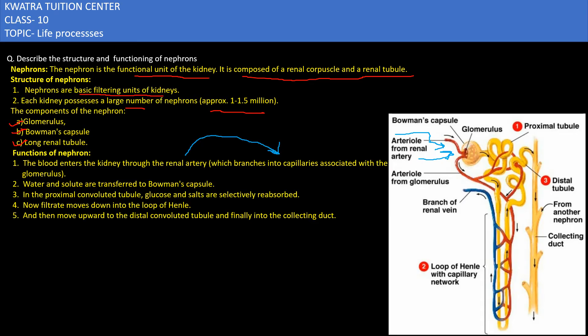Next, water and the solutes are transferred to the Bowman's capsule. Next step is that the proximal convoluted tubule which is present here, this is the proximal convoluted tubule. Here salt and glucose are selectively reabsorbed.